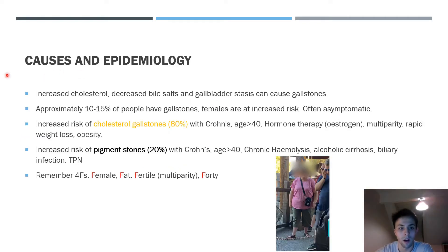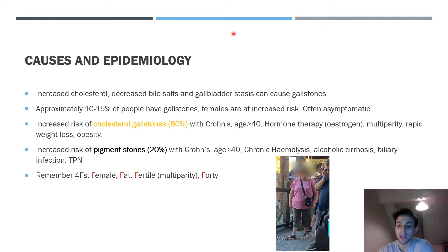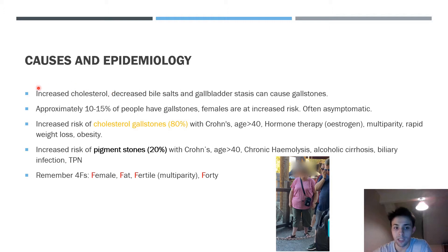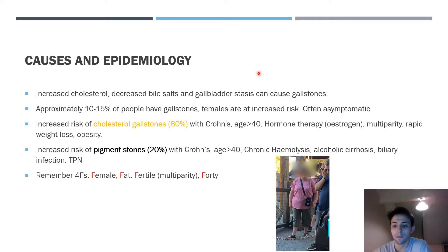Bile is made up of several components, including cholesterol, bile salts, and phospholipids, among others, which need to be in fine balance for gallstones not to precipitate. Risk factors include increased cholesterol, decreased bile salts, and gallbladder stasis — if bile just sits in the gallbladder without being excreted, it can promote crystallization of bile components and the formation of gallstones.